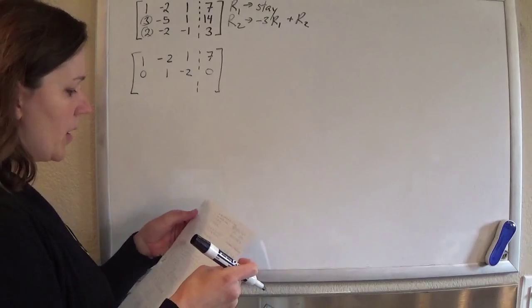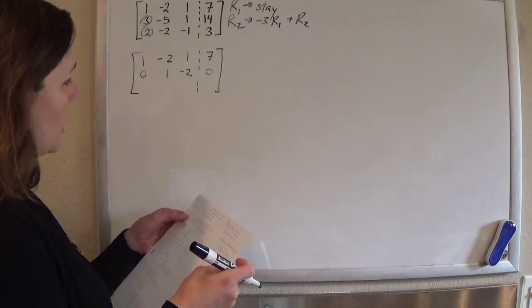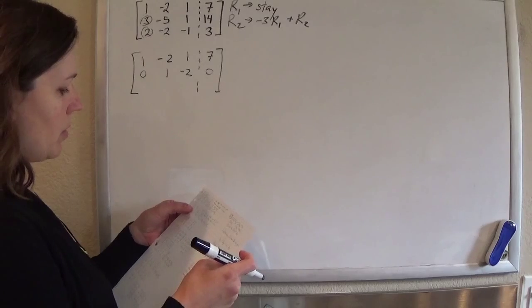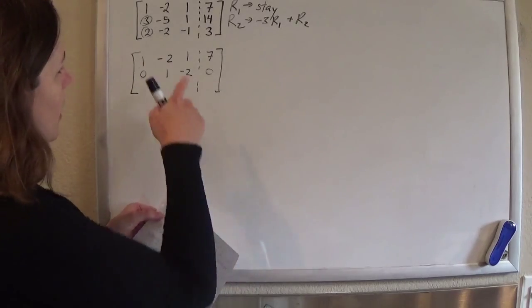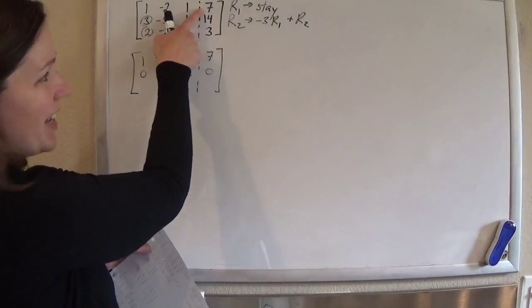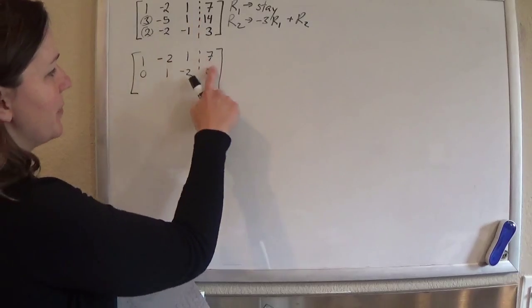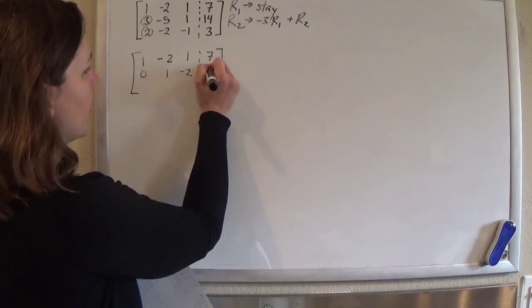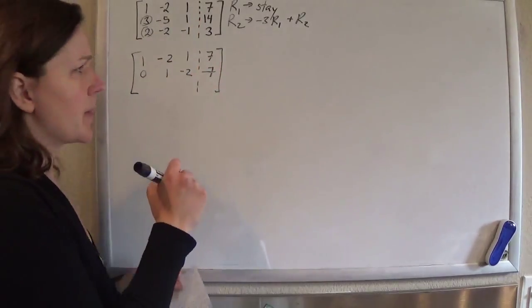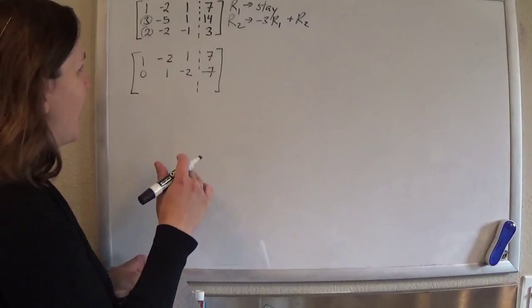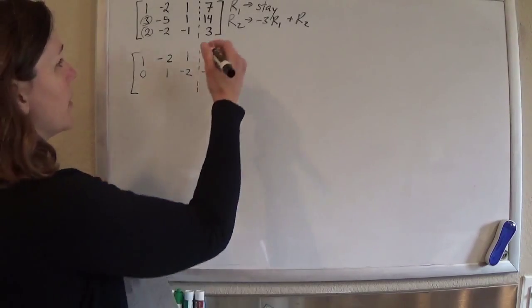So let's make sure I'm still okay. 0, 1, 2. Oops. Negative 3. Negative 21 plus 14 is negative 7. It's always good to have someone watching your back on these because it's easy to make mistakes. We keep moving.